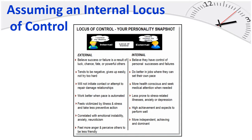Assuming an internal locus of control describes where you believe the power in your life resides — it can be internal or external. Internal: the responsibility lies with you. External: the responsibility lies outside of you. Those with an external locus of control believe success or failure is a result of luck, chance, fate, or powerful others. They tend to be negative, give up easily, not try too hard, and will not initiate contact or attempt to repair damaged relationships. They feel victimized by illness and stress, and are correlated with emotional instability, anxiety, and neuroticism.